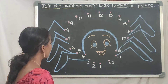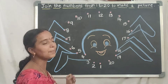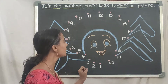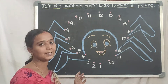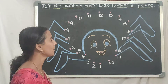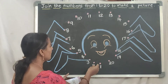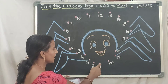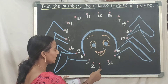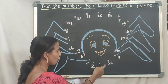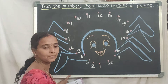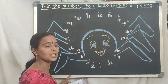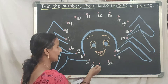Here you can see some incomplete picture. After joining all the dots and all the numbers, we can get the correct picture. You can see some dots, and a dot beside each number. All of you should practice numbers 1 to 20 — then only you will get this.